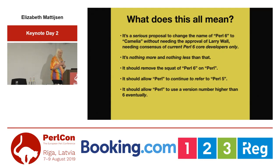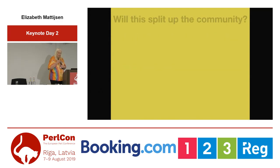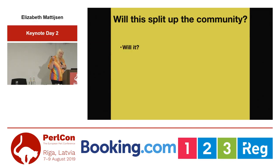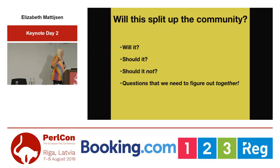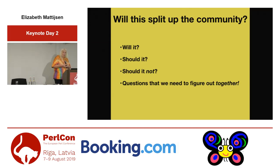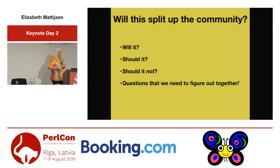And it should allow Perl to actually use a higher version number eventually — not like tomorrow, that would really be confusing. So, will this split up the community? I don't know. Will it? Should it? Should it not? These are questions we need to figure out together. We can't have Larry somewhere in the background saying you should or you shouldn't do that — we need to figure it out ourselves.